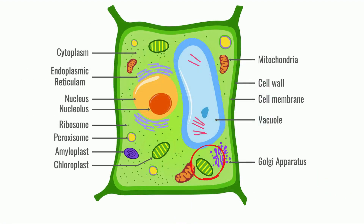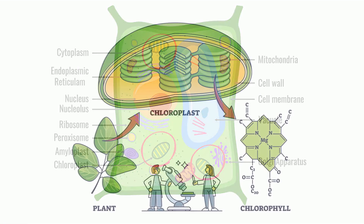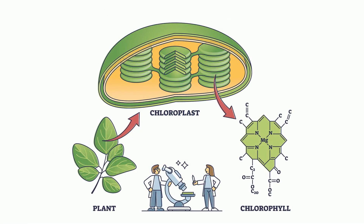Chloroplasts, which are found only in plants, are the site of photosynthesis. At the chloroplasts, carbon dioxide, water, and sunlight are combined to create sugar. Then the sugar is used at the mitochondria to produce energy.